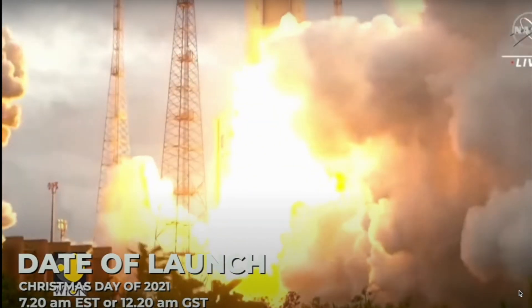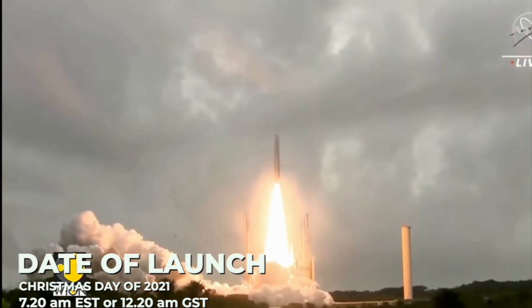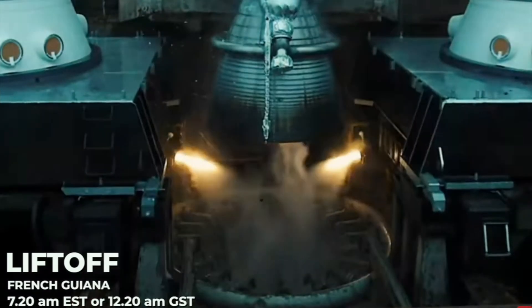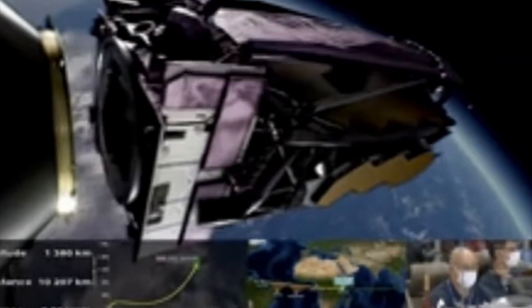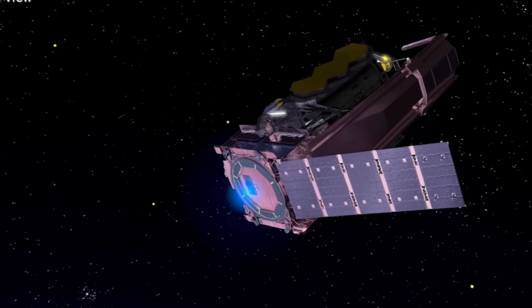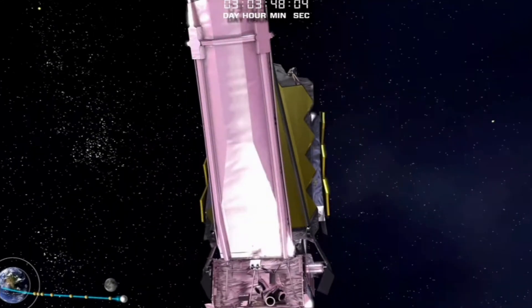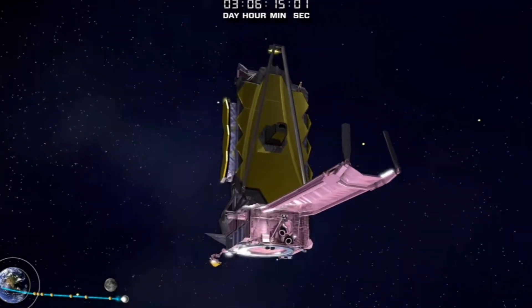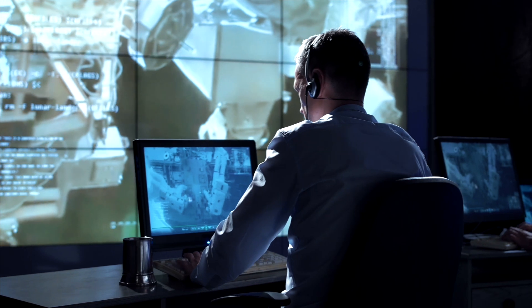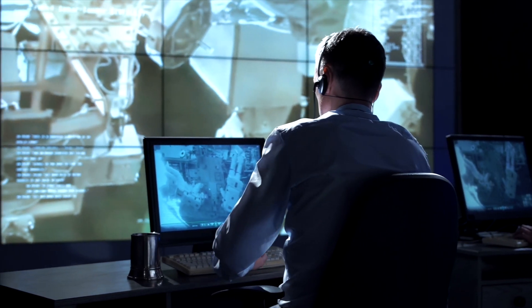On December 25th, 2021, an Ariane 5 launch vehicle launched the James Webb Space Telescope from Kourou, French Guiana, and it was released from the upper stage 27 minutes later. The complexity of the telescope and the high-stakes nature of the launch were noted by the media, scientists, and engineers. It will take several weeks to cool to its operational temperature, after which it will go through final testing and calibration procedures for about five months before beginning its research program.